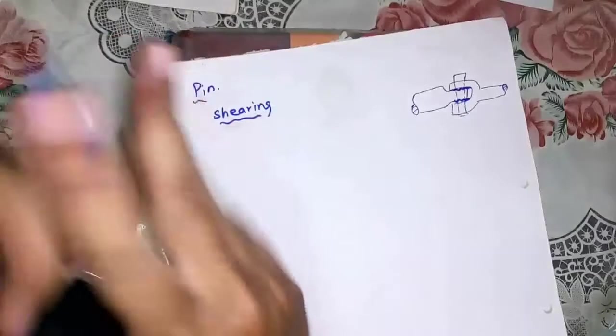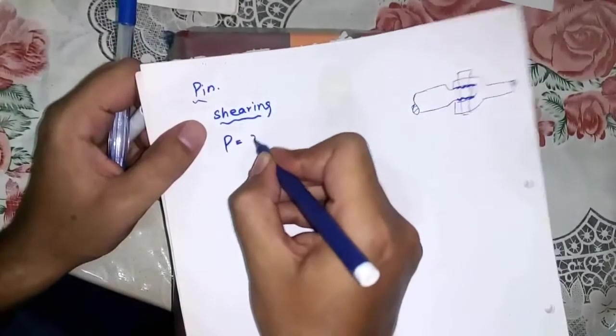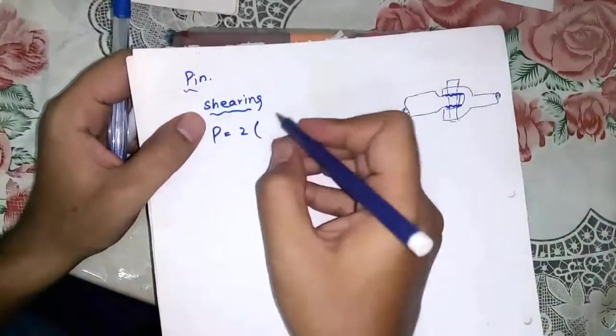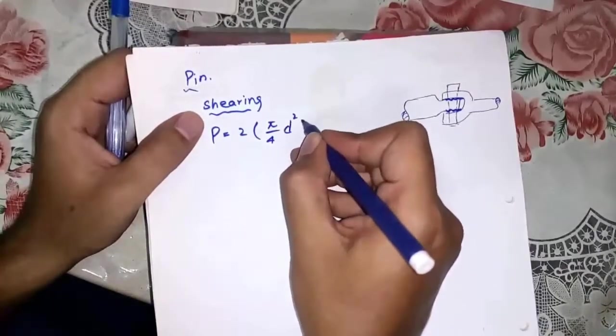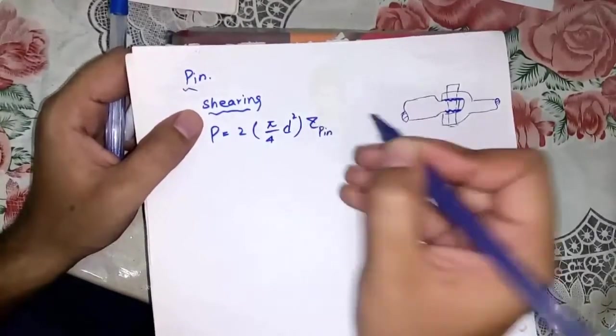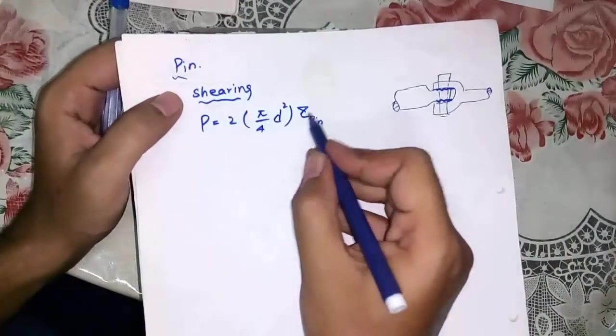The pin has diameter d, so the formula is P equals 2, as it is double shearing, into cross-sectional area of the pin and tau. Remember, write the shear stress of the pin's material.